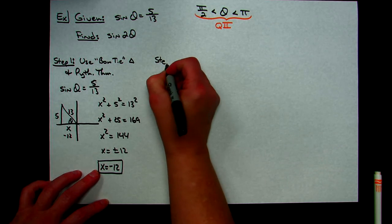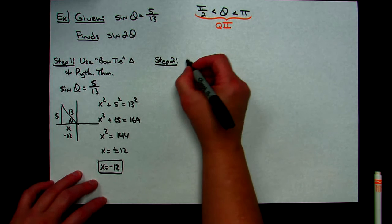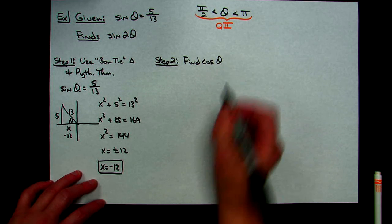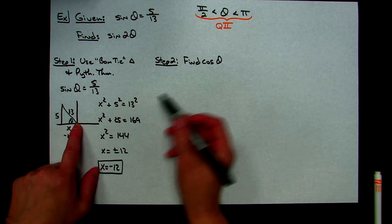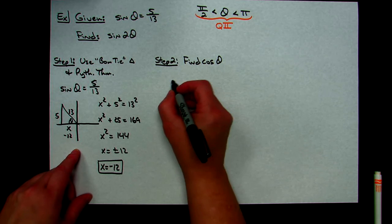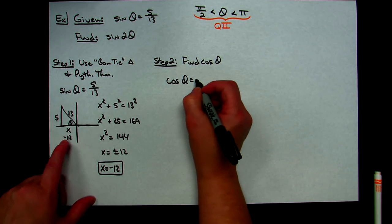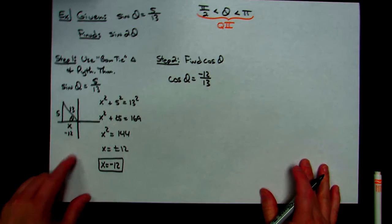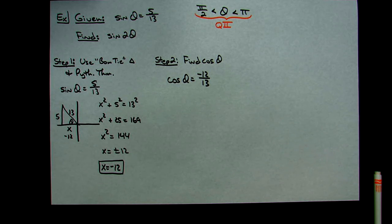Now that I have the reference triangle set up, I can find cosine of θ for use in the formula in my last step. Cosine is adjacent over hypotenuse, so cosine of θ equals negative 12 over 13. Now I've got all the values I need to plug directly into my formula.